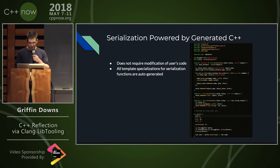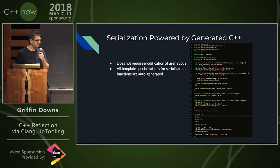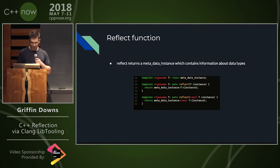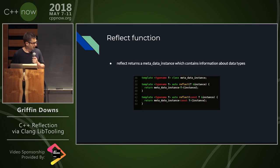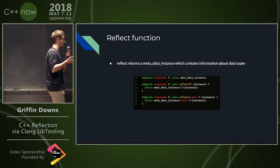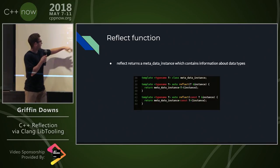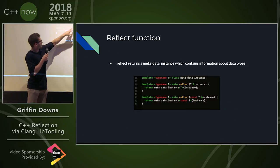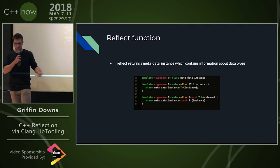Those are the benefits. We do that just through a bunch of template instantiations. What this centers around is this reflect function — it returns a specialization of a metadata instance.